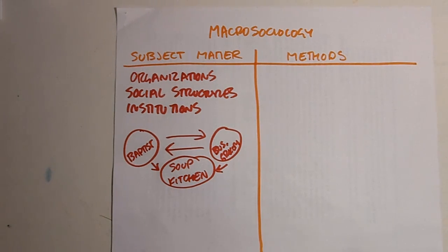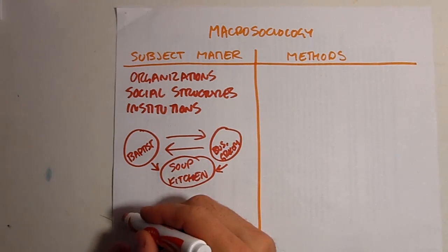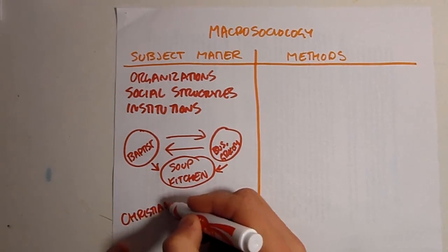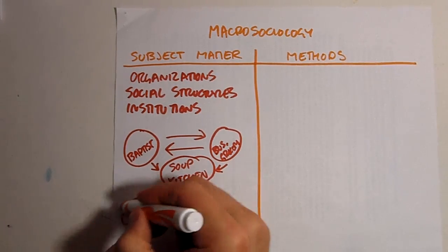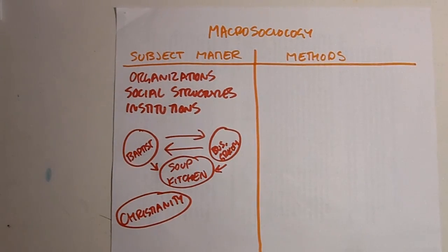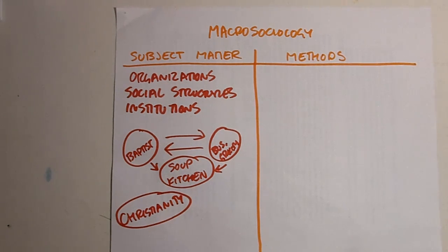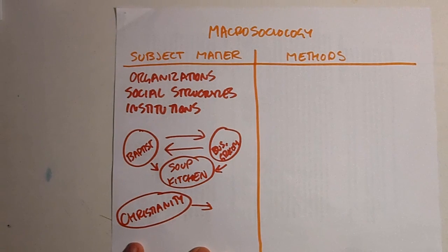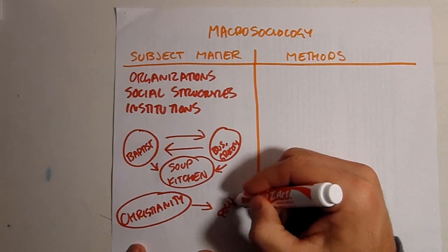Macro-sociology doesn't end there, though — it can get even bigger. We used the example of a specific church, but we could go broader and talk about Christianity as a whole. Within the social category, identity, or social condition of Christianity, there are thousands, if not hundreds of thousands, of different churches and individuals who identify with Christianity. A macro-sociologist might be interested in how Christianity, as a social entity, influences the political process within a nation.